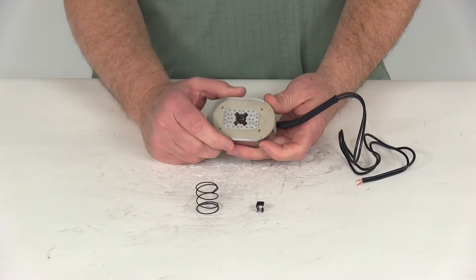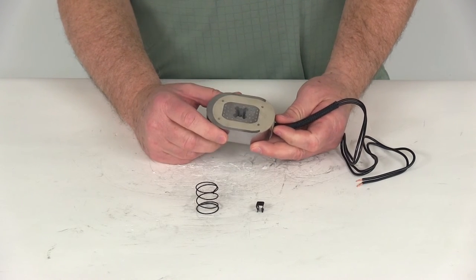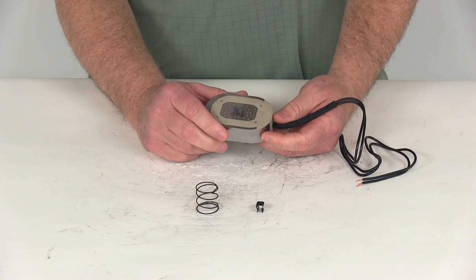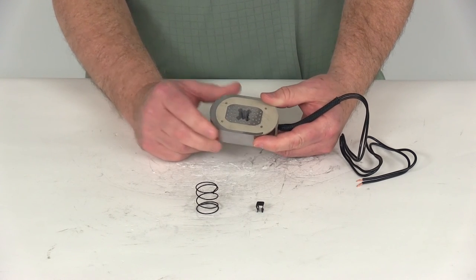That concludes the review of the replacement trailer brake magnet kit for 12-inch brake assemblies on 5,200-pound to 7,000-pound axles.